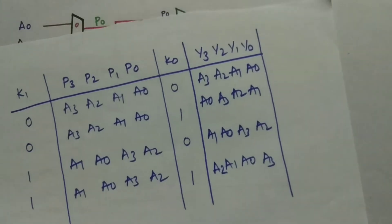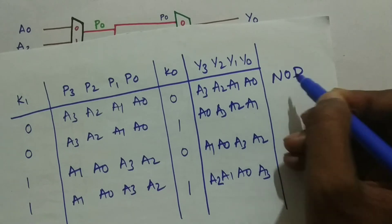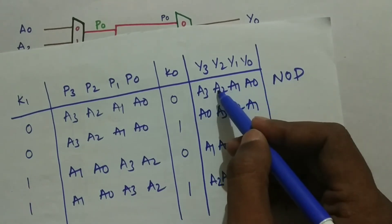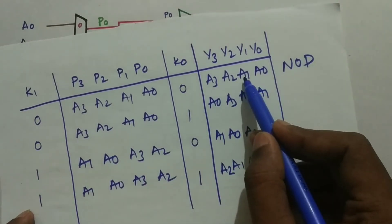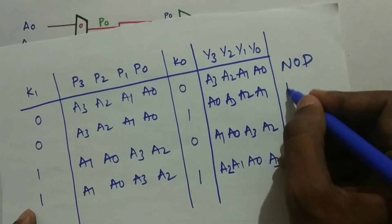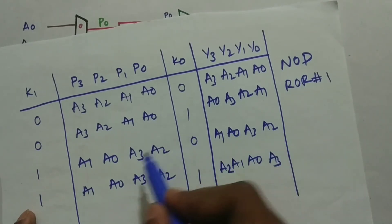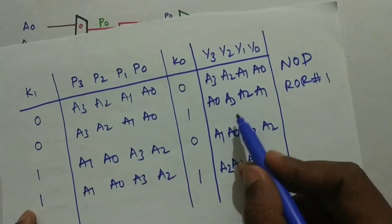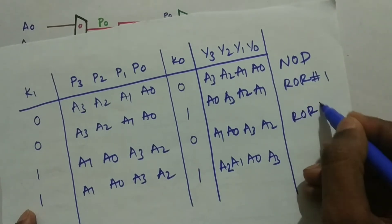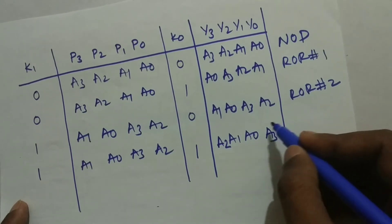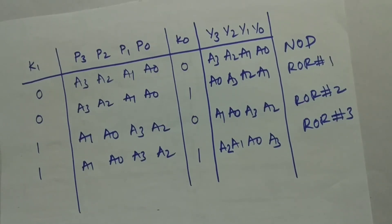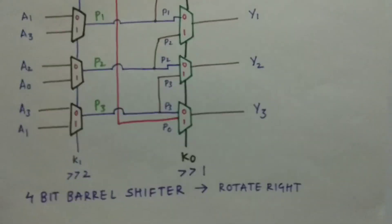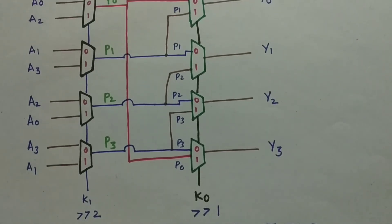When K1=0 and K0=0: no operation — A0, A1, A2, A3 are perfectly aligned. When K1=0 and K0=1: rotate right by 1. When K1=1 and K0=0: rotate right by 2. When K1=1 and K0=1: rotate right by 3 — A3 has been shifted by three bits and A0, A1, A2 are rotated. This is a logarithmic barrel shifter.